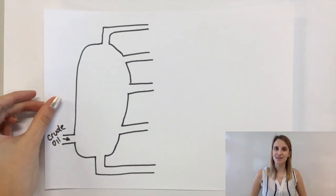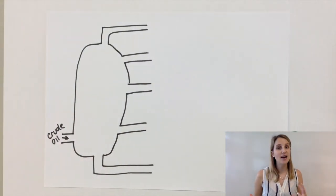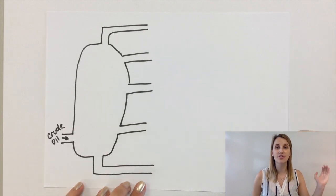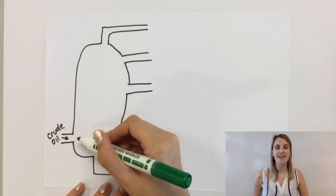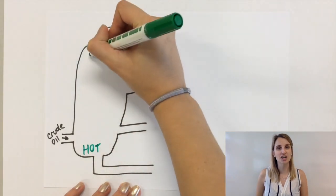Hopefully this diagram looks familiar to you. This is how we separate crude oil. So the crude oil comes in at the side and then it gets separated out into all these different fractions.